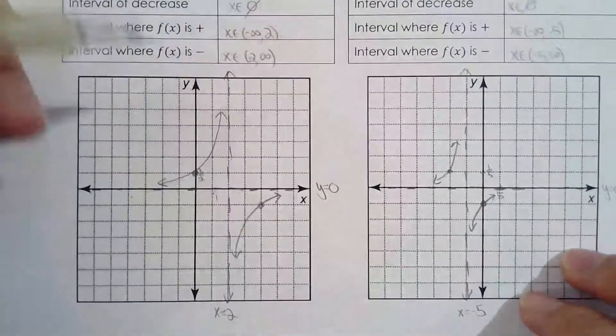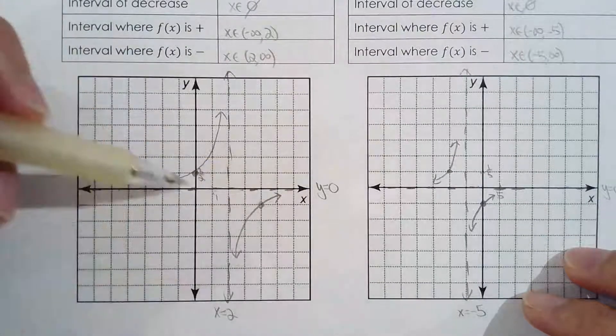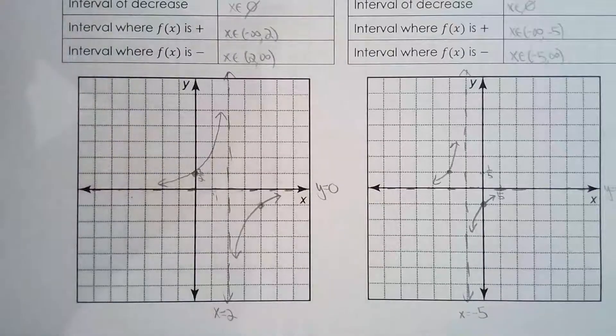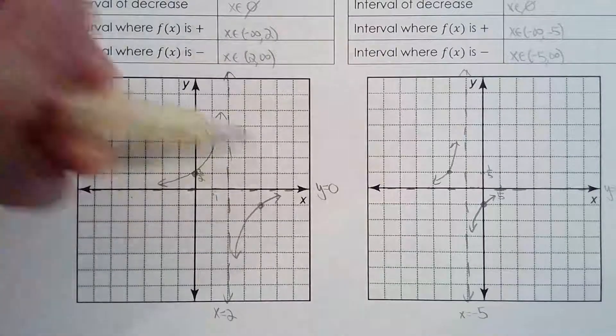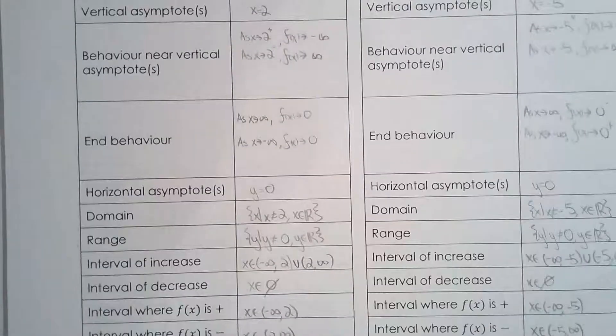So, knowing that the asymptotes are here and that the y intercept is here, this must be the graph I have. So using the graph, I filled in the whole table.